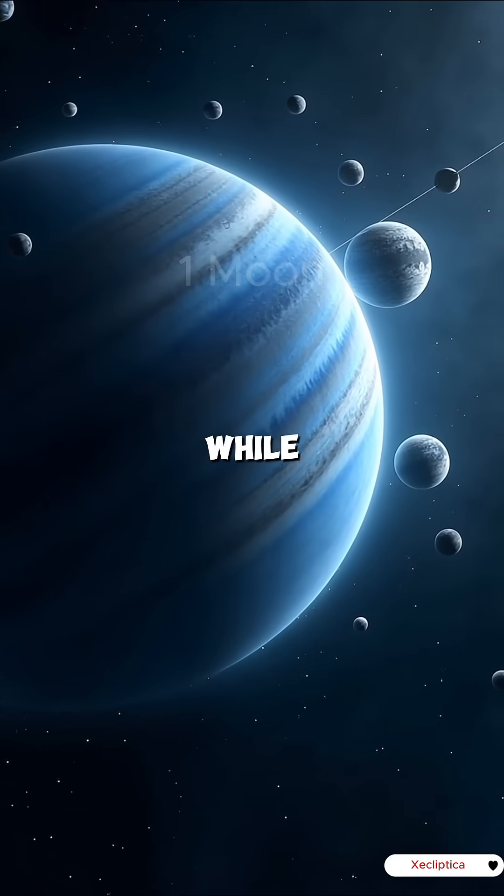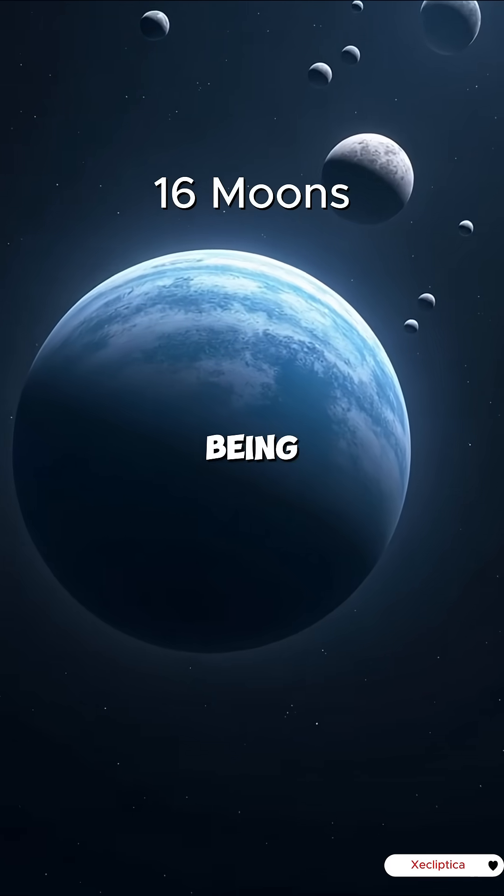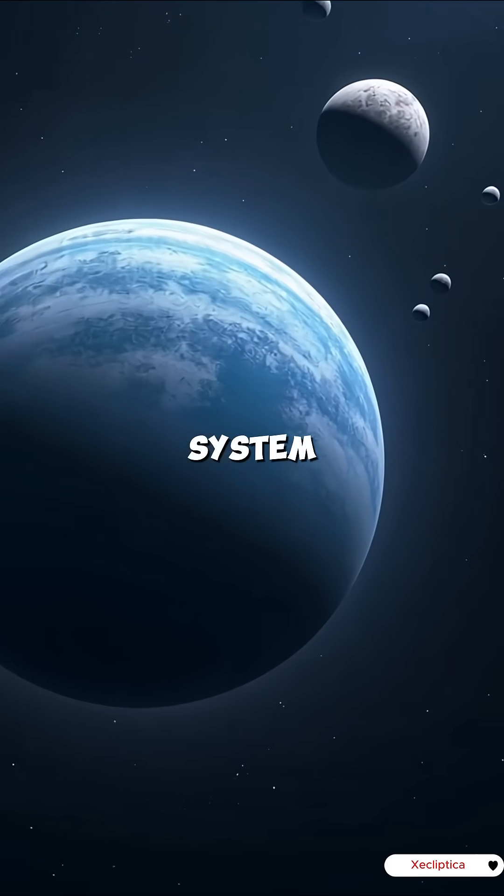Earth has one moon, while Neptune boasts 16 moons, with Triton being the only large moon in our solar system orbiting backwards.